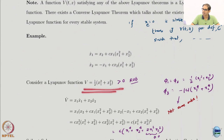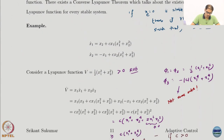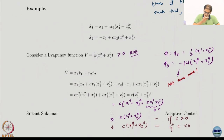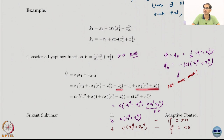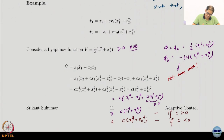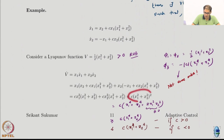If I take this Lyapunov function — the same one I used for the harmonic oscillator, which is radially unbounded — and take the derivative, for the harmonic oscillator I would have got 0. But here, because of these additional terms, I get c·x1²(x1²+x2²) + c·x2²(x1²+x2²), which combines to c·(x1²+x2²)².